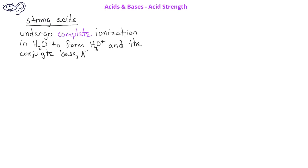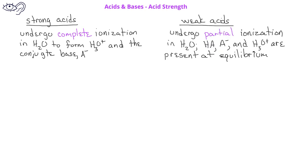These terms, strong and weak, will be used much the same way that we used them when we talked about strong and weak electrolytes in other videos. Specifically, a strong acid, by definition, undergoes 100% ionization in water. However, a weak acid only partially ionizes in water.